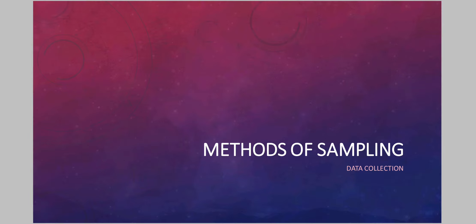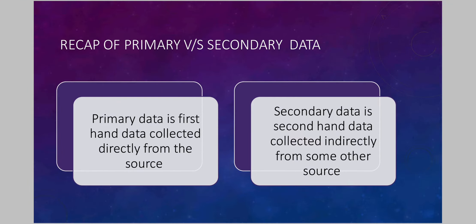Hello students. This is the second video of the chapter on data collection, in which we are going to talk about methods of sampling. But before starting with methods of sampling, let's recap what we have studied till now. We have studied primary and secondary sources of data collection. Primary data is first-hand data collected directly from the source, whereas secondary data is second-hand data collected indirectly from some other source. For example, conducting an interview is primary data collection, whereas reading that interview published in a magazine is a secondary source of data.